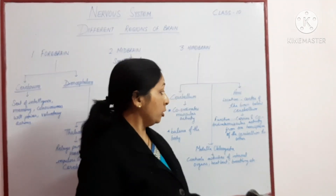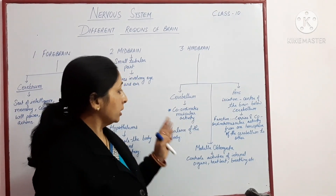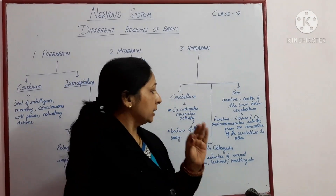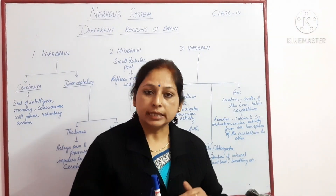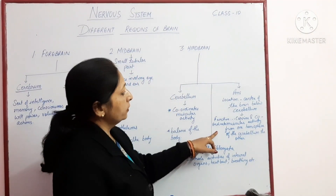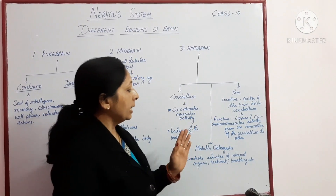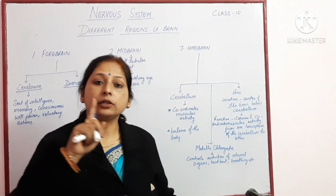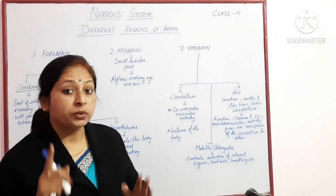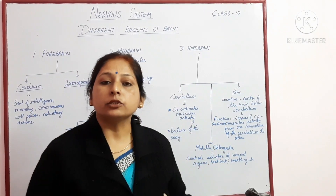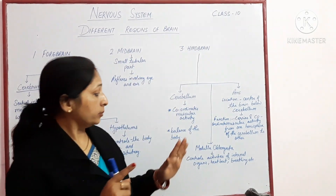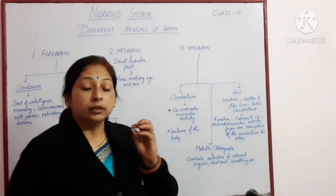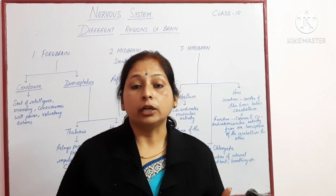Next is pons. Pons is located in the center of the brain, below the cerebellum. Its function is to carry impulses for muscular activity from one hemisphere of the cerebellum to the other hemisphere, so the two hemispheres of the cerebellum are connected via pons. The coordination of muscular activity is also controlled by pons.